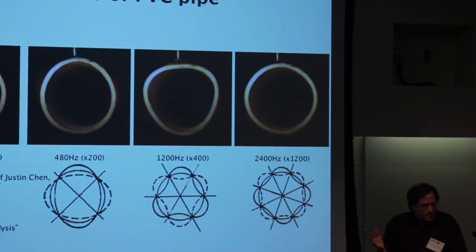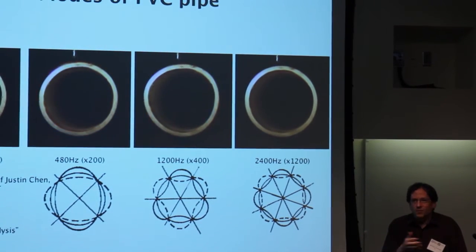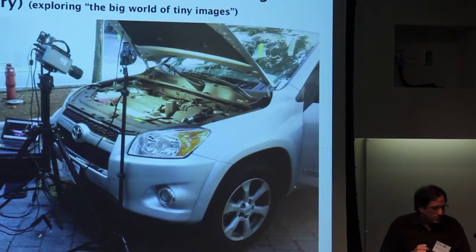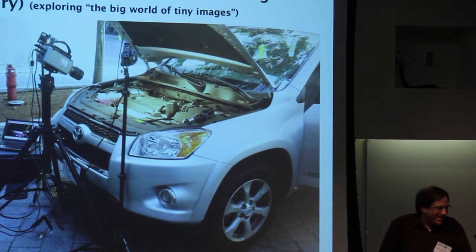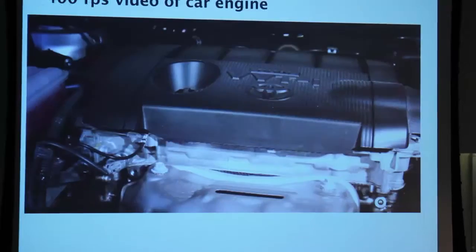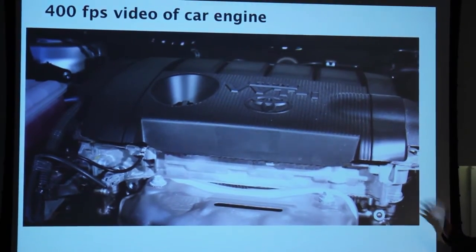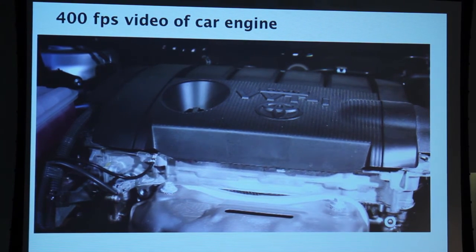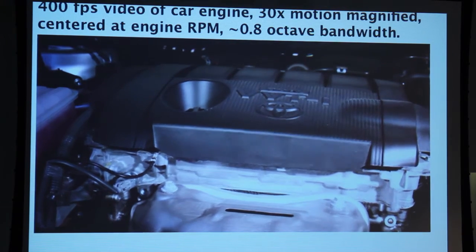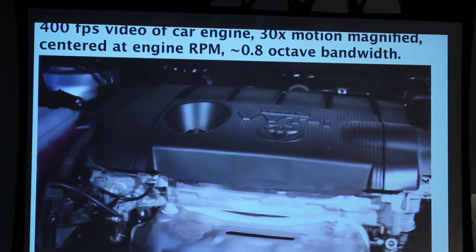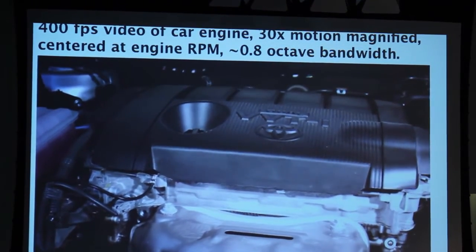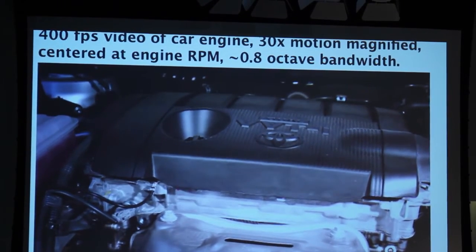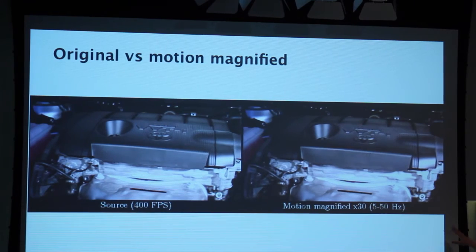Now I want to show you just two or three other examples of what we call the big world of tiny motions. Let's go to a car — this is Michael's car. There's a high-speed camera with a light on it. If you just take the raw high-speed video, this is what you see, which is to say nothing much. If instead you take these images frame by frame, put them into a V1-like representation, measure the local phase changes, amplify it, and take it back out, you get motion magnification. Now you can see the different parts of the car moving around, which is very interesting to a mechanical engineer. Here's a side-by-side comparison of unprocessed and processed.